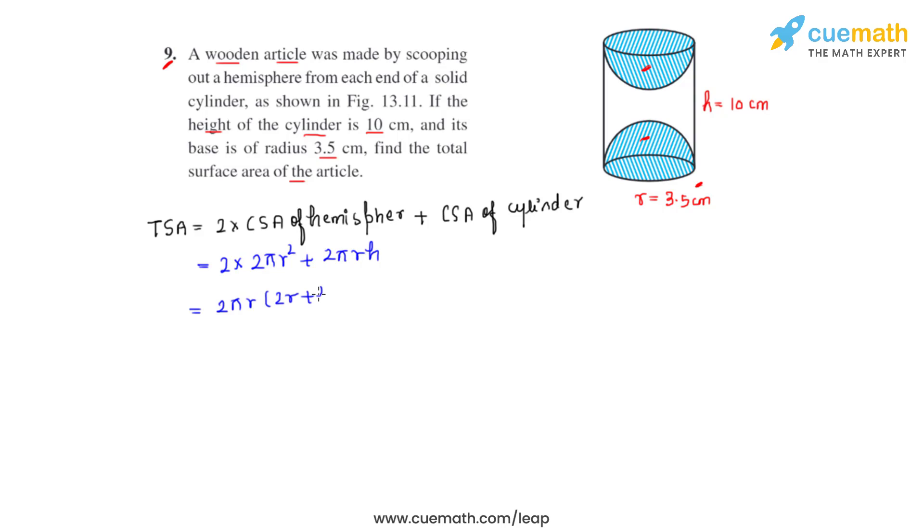Now let's substitute the values: 2 times 22 by 7 times 3.5, which is the radius, which is the same for the hemisphere and the cylinder, times 2 times 3.5 plus the height of the cylinder, which is 10. So we can cancel out this and we get 0.5 in the numerator.